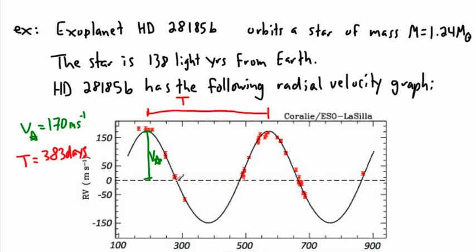You can measure the period from one trough to the next, or from any equivalent point to the next. Looking carefully, from about 375 to 775 on the time axis is about 400 days, but a little less — so that's why the period is about 383 days. Just from that, we have everything we need, because we also have the mass of the star.